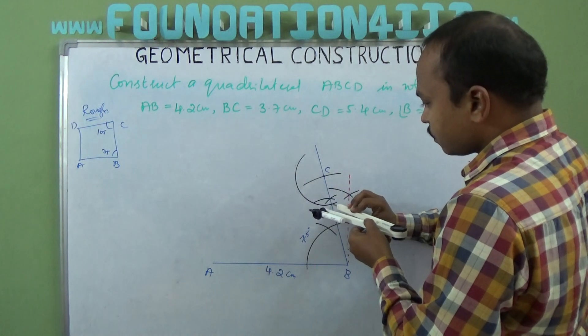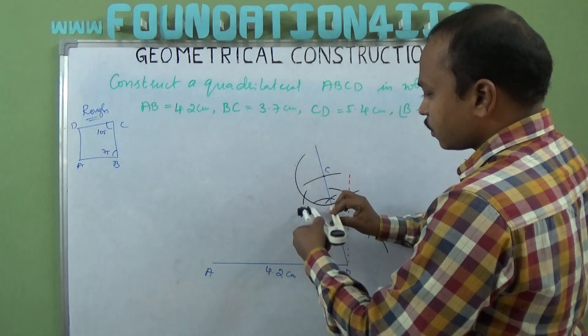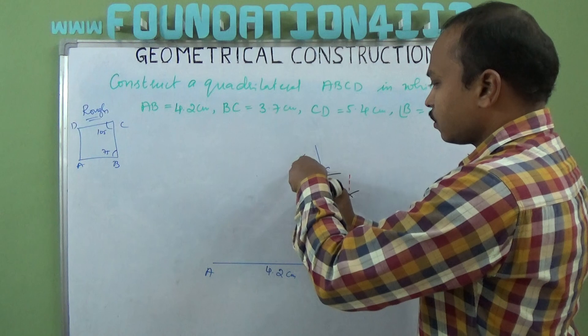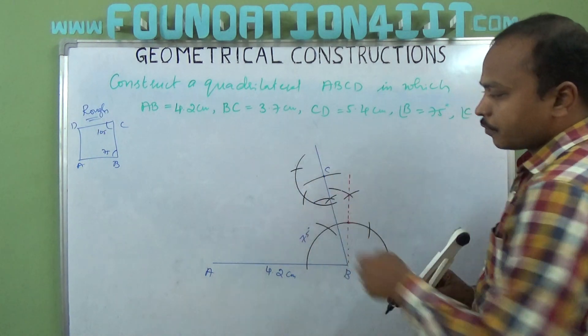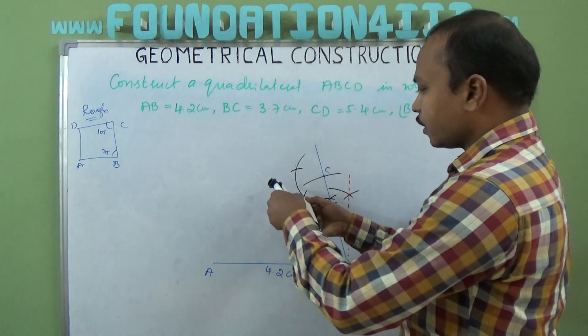Same radius, cut one arc at 60. At 60, again 60, you get 120. Now if you again bisect this 60 and 120 you'll get 90.